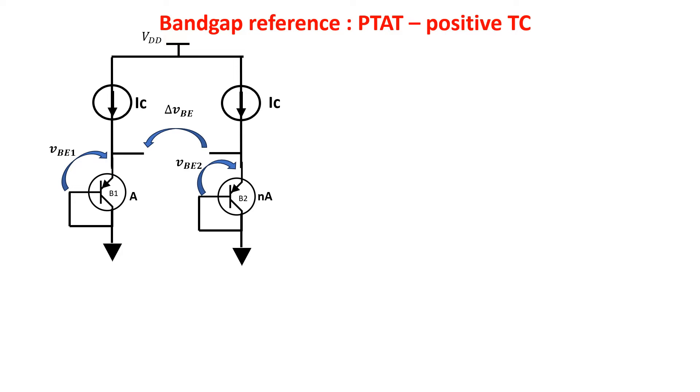For the PTAT voltage we create the circuit in which the two BJTs are built equal, but BJT1 has area A and BJT2 has area N times A. Since the current IC is the same, we can write this relationship. So VBE1 minus VBE2 is equal to this and therefore to this, where you see a proportionality to absolute temperature.